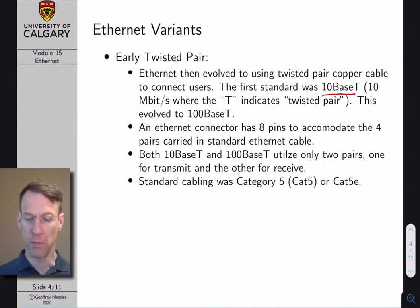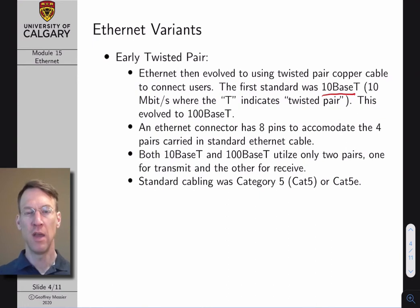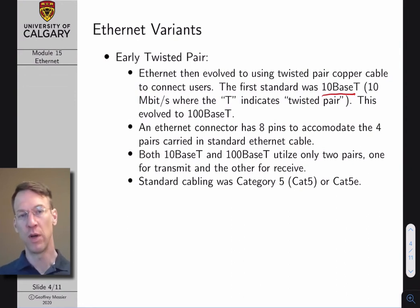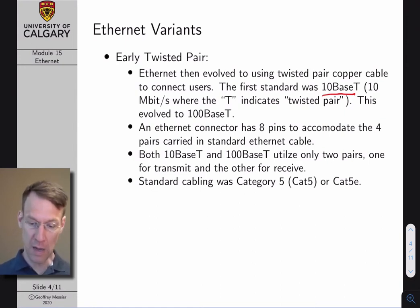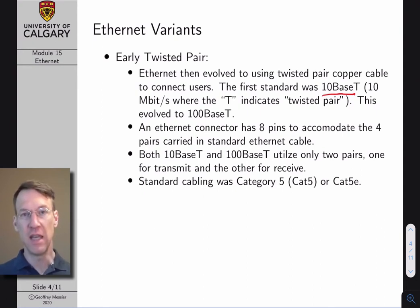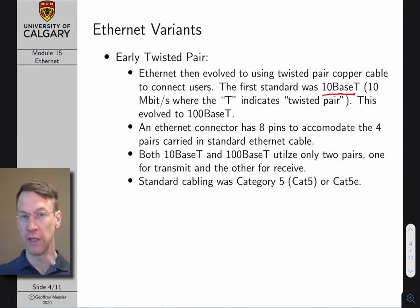An Ethernet connector has eight pins to accommodate four pairs. The use of these pairs has evolved as the Ethernet standard has evolved. For a while, the pairs were used to detect collisions — transmitting over one twisted pair and listening to see if somebody else was transmitting over another. Now more pairs are used as parallel channels of transmission to improve throughput. Standard cabling was Category 5 or Category 5E; now we have Cat 6 and better. Better cable means more twists and sometimes better shielding to prevent crosstalk.